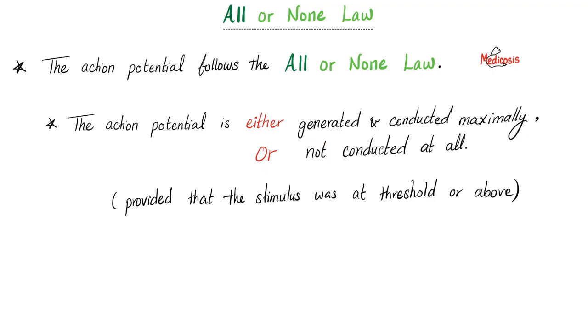Okay, Medicosis, I'll give you subthreshold. What will you do? I'm not gonna be excited at all. Okay, Medicosis, I'll give you threshold. I'll give you 100% response, 100% excitability. Okay, Medicosis, I'll give you suprathreshold. I'll still give you the same 100%. It's either all or none.